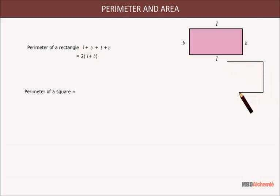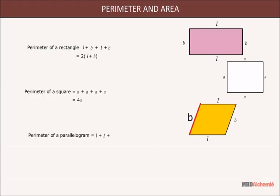Perimeter of a triangle is equal to sum of its three sides.